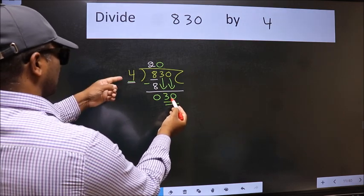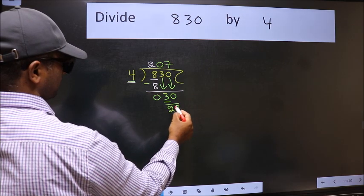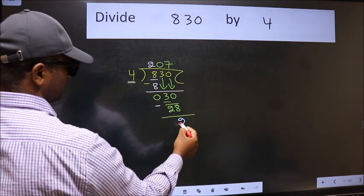Now, 30. A number close to 30 in 4 table is 4 sevenths, 28. Now, we should subtract. We get 2.